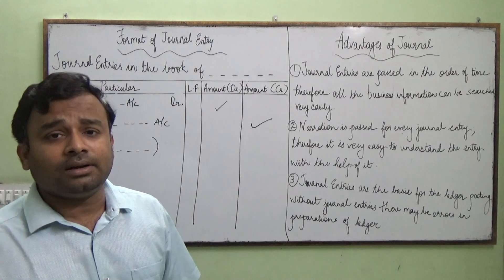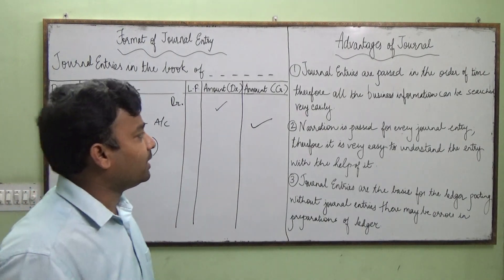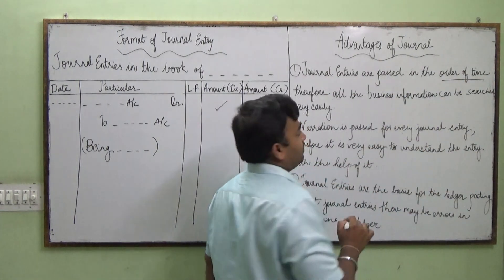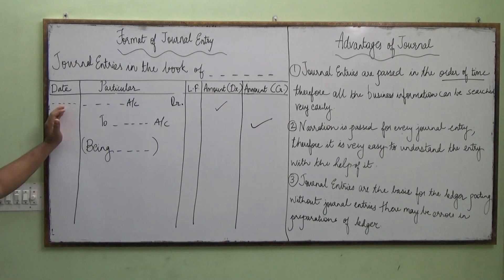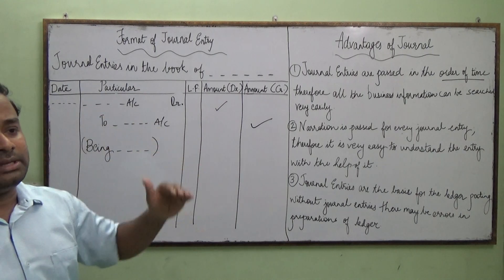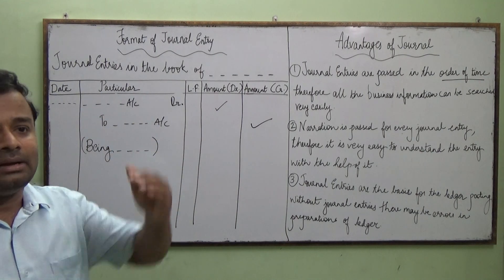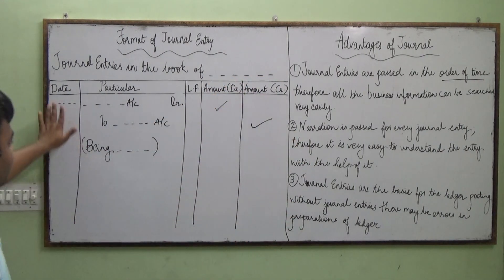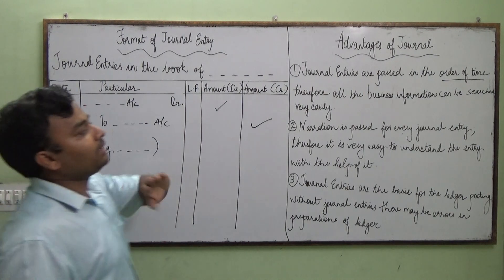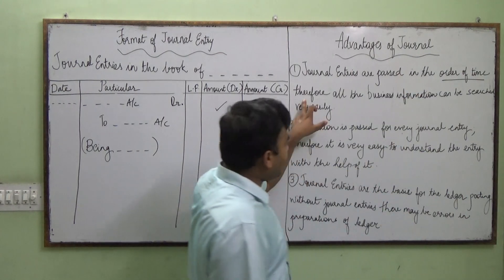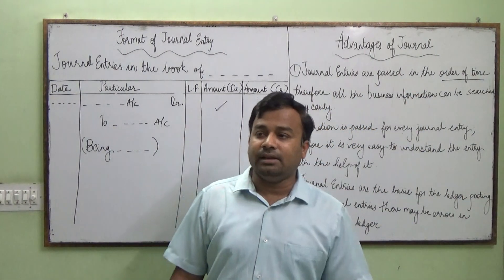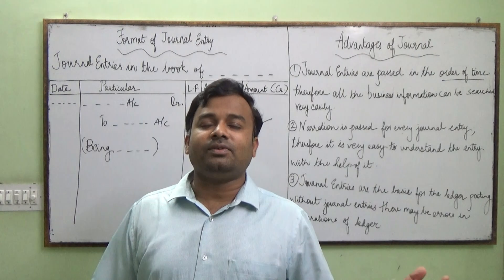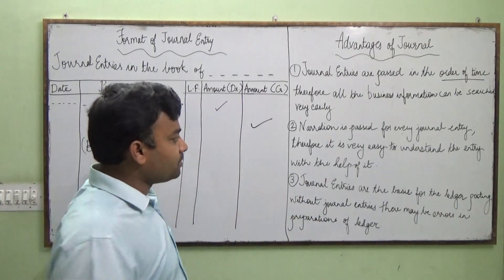Next we discuss the advantages of journal. The first advantage is that journal entries are passed in the order of time — that is, transactions are recorded date-wise: 1, 2, 3, 4, 5, and so on. It's not like we record the 4th date first, then the 6th, then the 10th. Therefore, all business information can be searched very easily if you know the date, because the entries are date-wise.